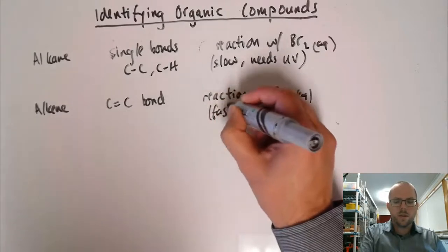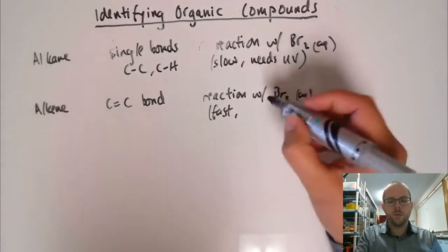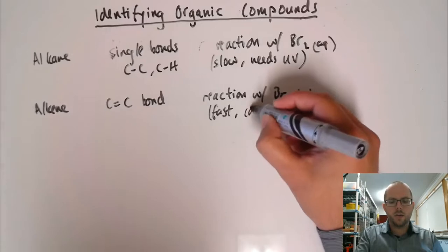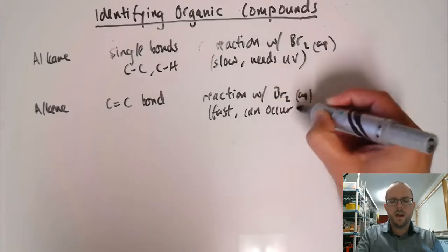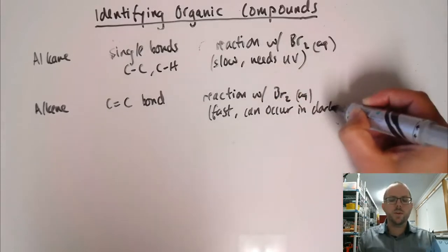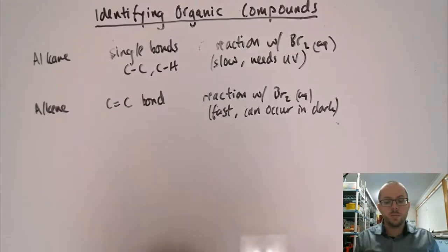This reaction with bromine water is fast and can occur in the dark. If you conduct this reaction away from a source of UV light, the alkene will very quickly react with the bromine and the alkane won't. The alkane requires a source of UV light for that reaction to happen. It will eventually, but it's slow. In our production materials module, we'll go through the difference between these reactions in a little bit more detail.